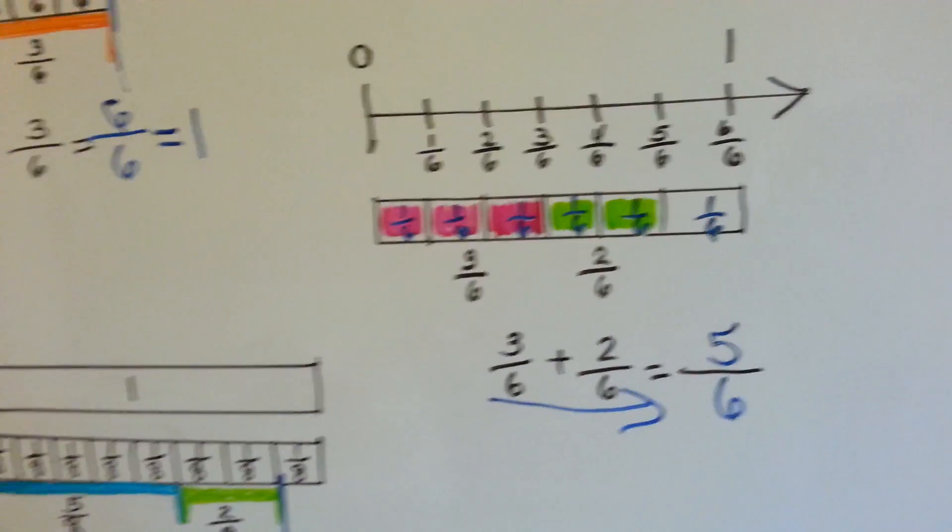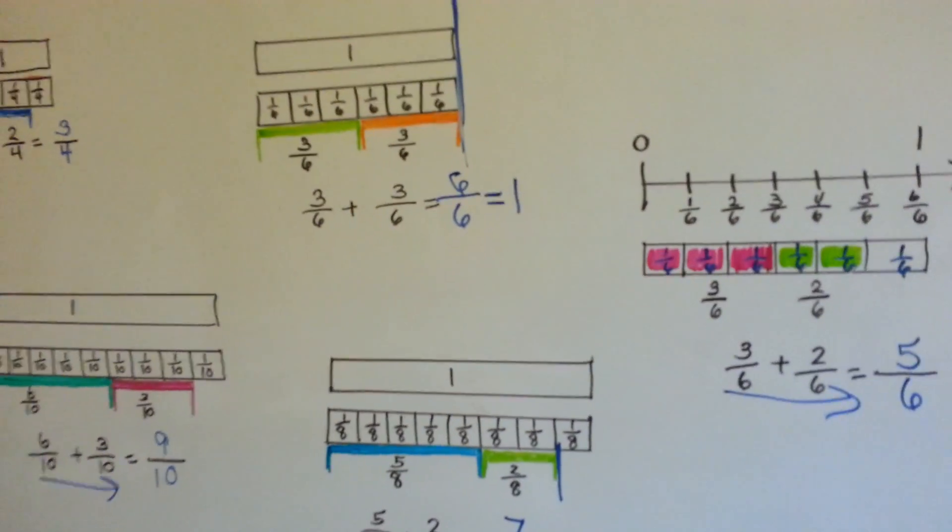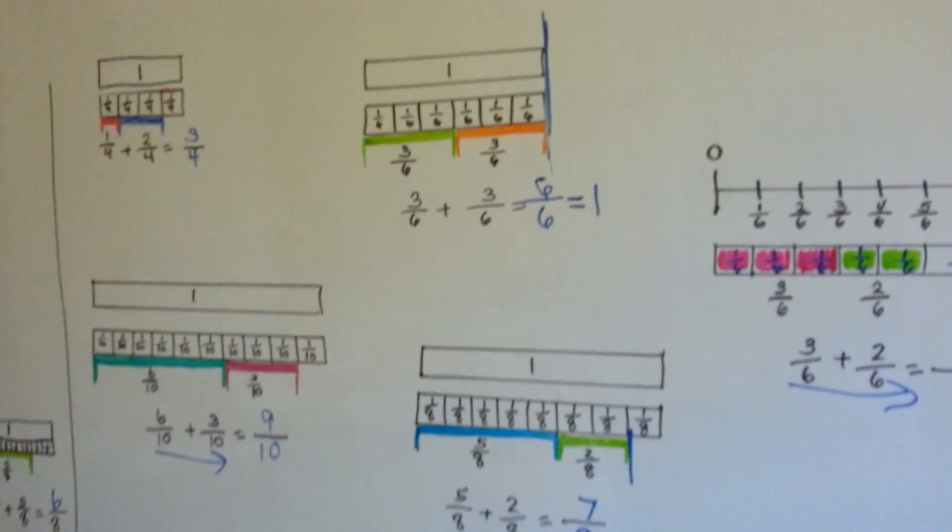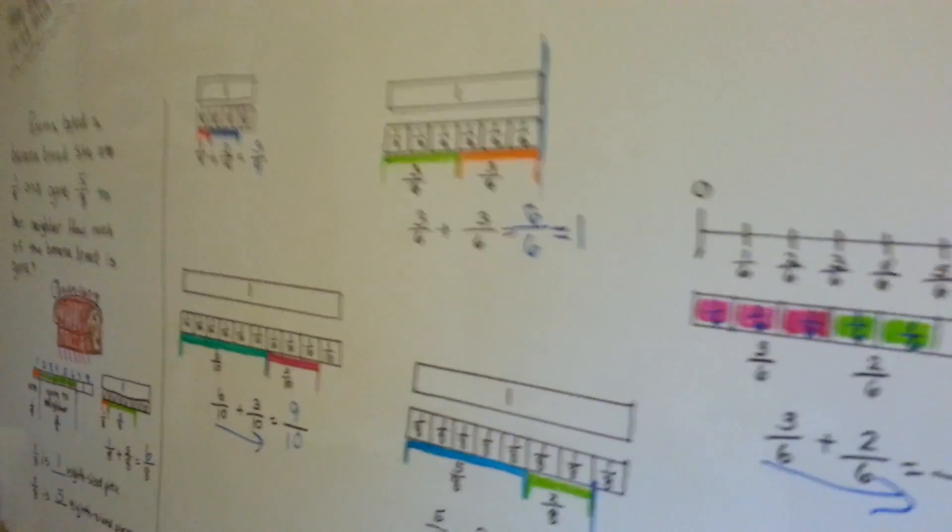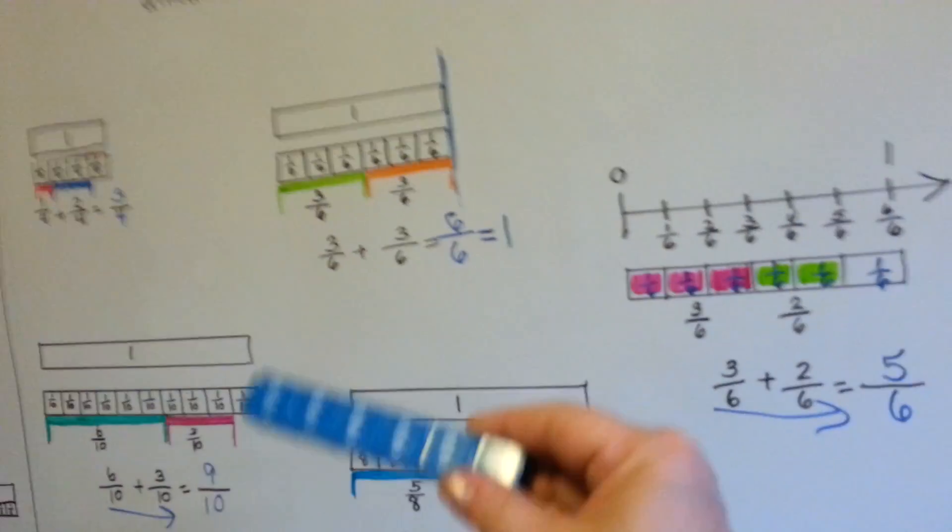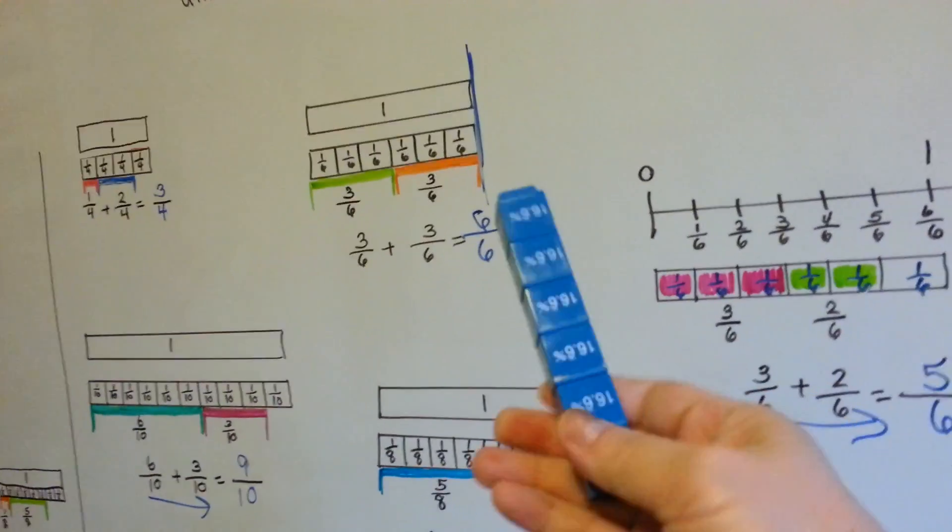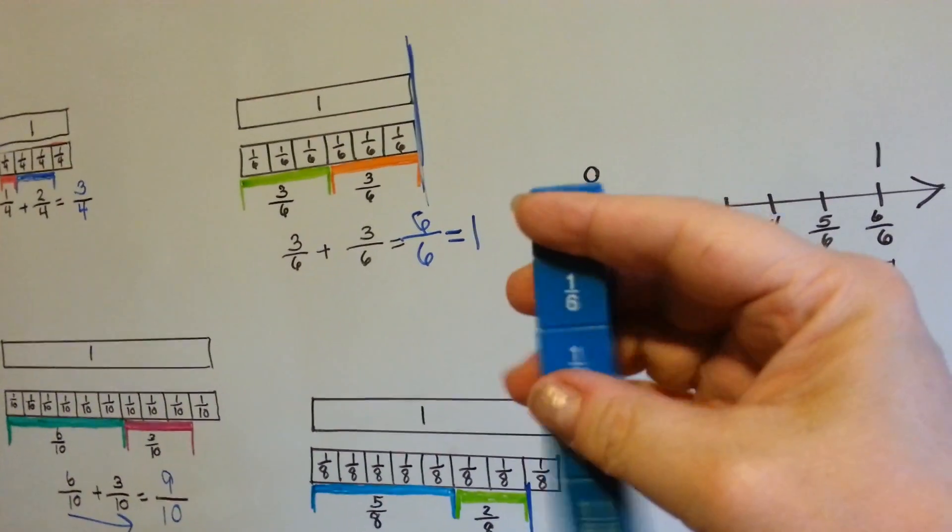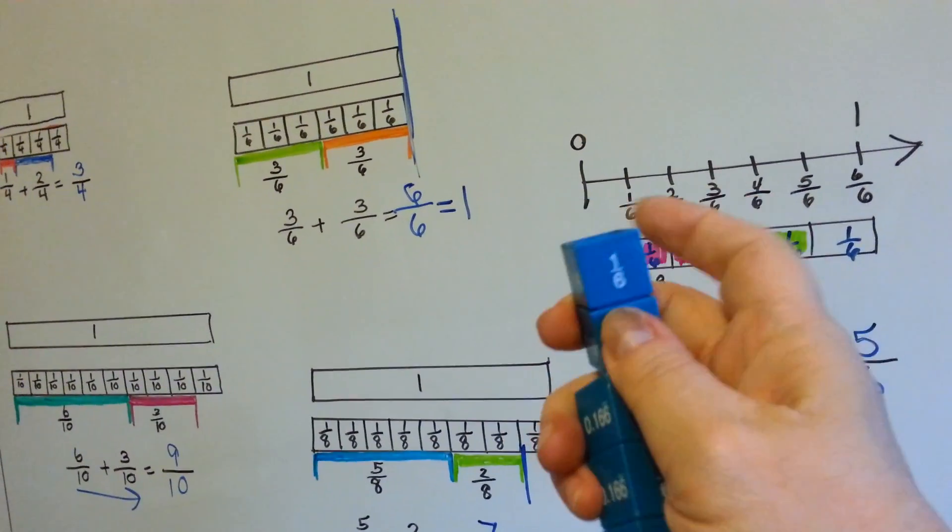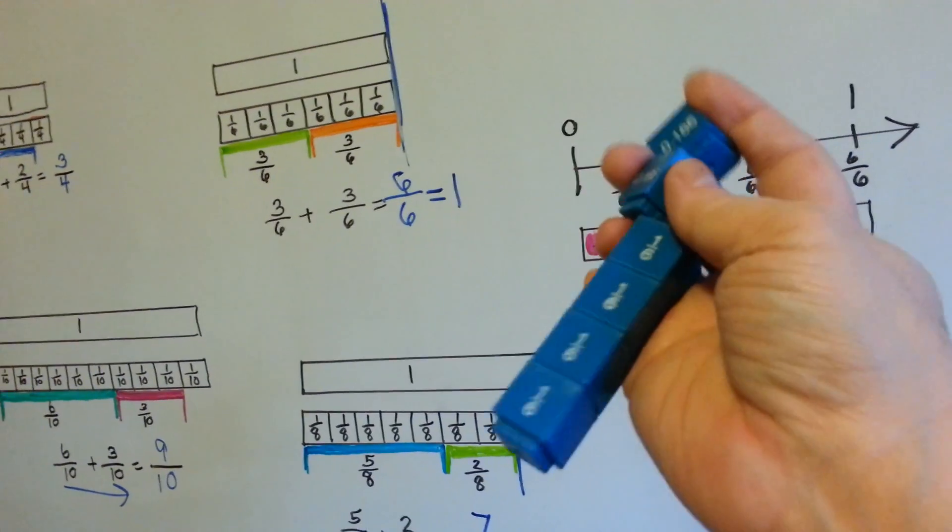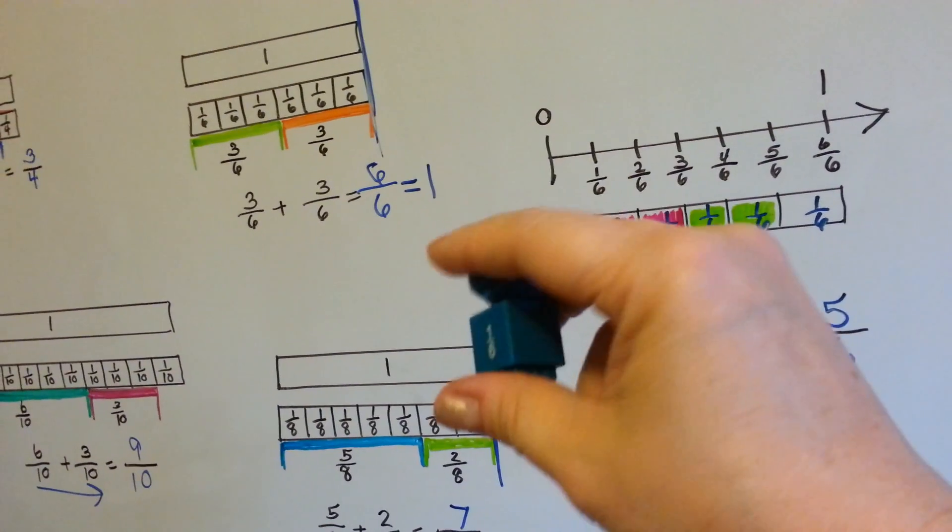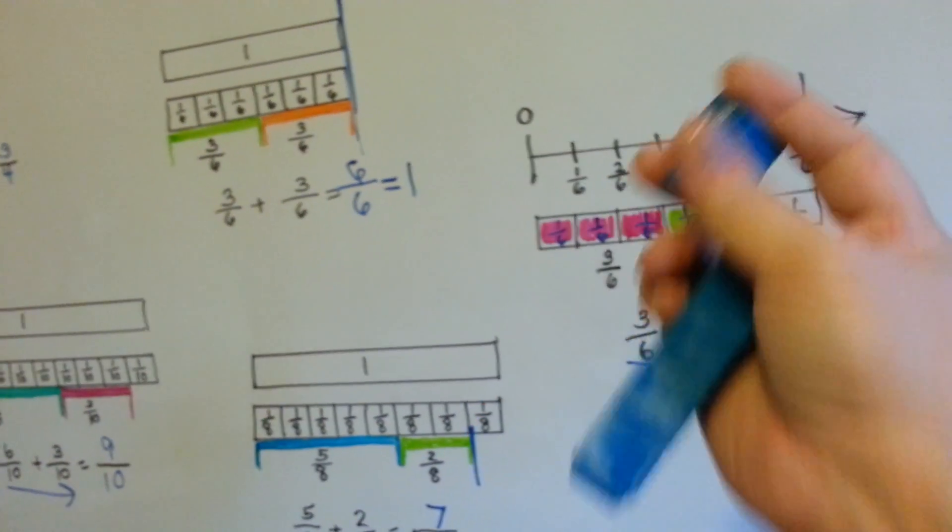So that's how you can add fractions using models like a number line or you could draw blocks. You can even buy these little things. They break apart. This is the 1 sixth one and you can break them apart and you can do 1 sixth, 2 sixths, 3. They even have decimals on them, but they've got fractions on them.